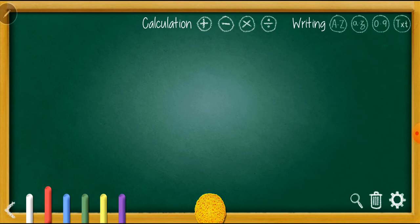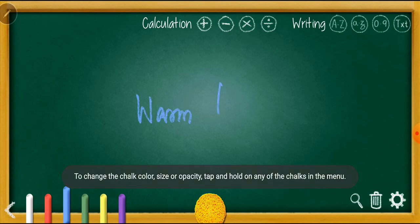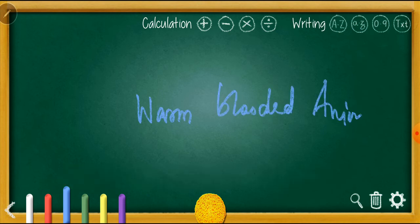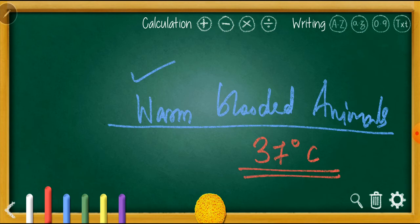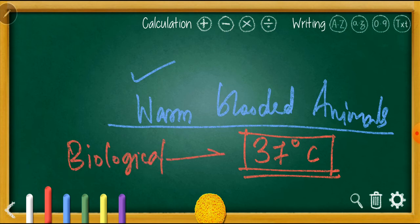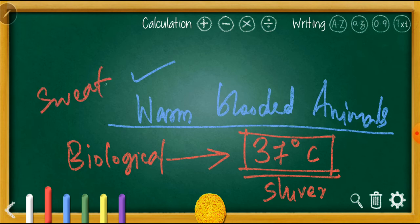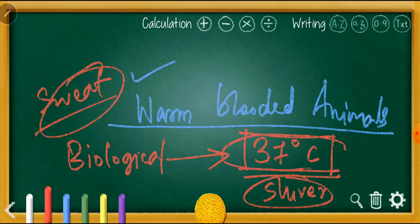In biology, we have studied that we are warm-blooded animals. There are two types of animals — warm-blooded and cold-blooded. As warm-blooded animals, we have a fixed body temperature of 37 degrees Celsius. This body temperature is maintained by many biological processes. For example, if it is very cold, our body starts to shiver to raise temperature; if it is very hot, we sweat to lower temperature — both processes maintain 37 degrees Celsius.